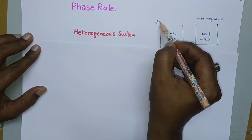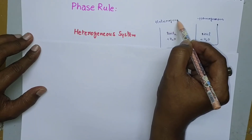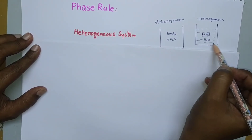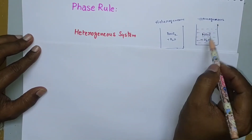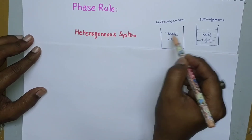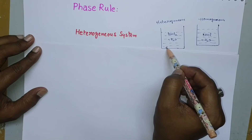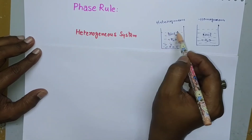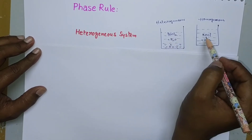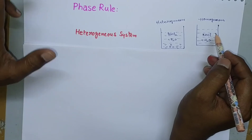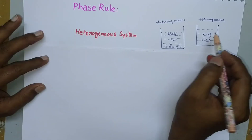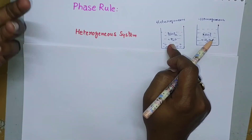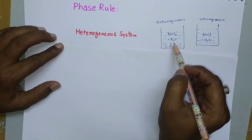Barium chloride dissolved in water forms a heterogeneous system. In the sodium chloride solution, the concentration is the same at all points, so it is called a homogeneous system. With barium chloride, the concentration is different at different points — BaCl2 precipitates at the bottom, so the concentration of BaCl2 is more at the bottom and less at the top. That is why it is called a heterogeneous system. A homogeneous system is one where the chemical composition is the same at all points; a heterogeneous system is one where the composition is different at different portions.